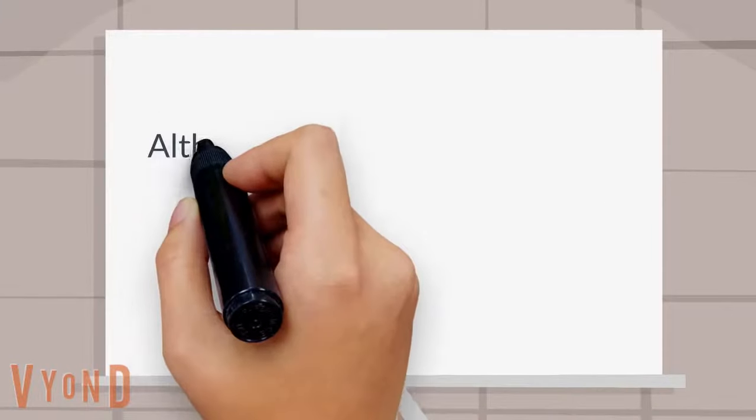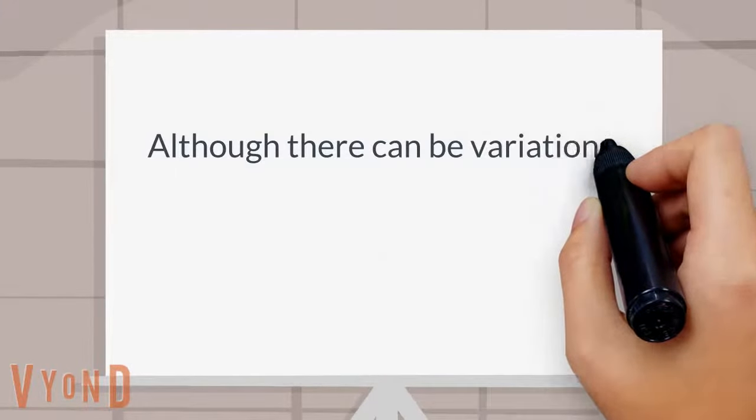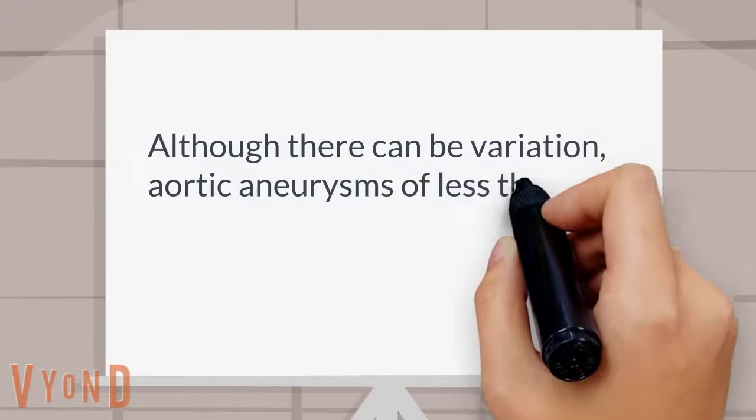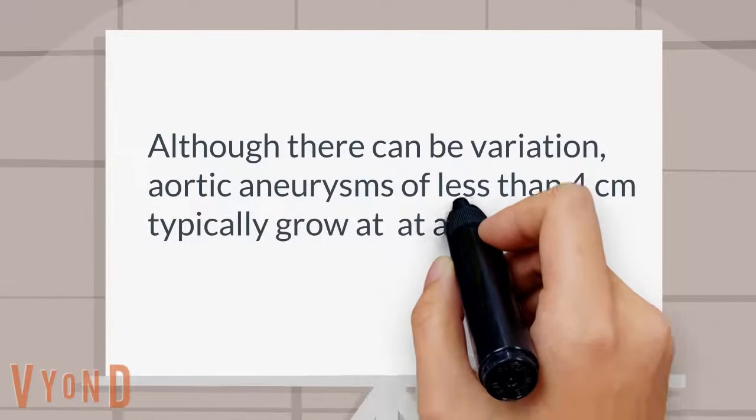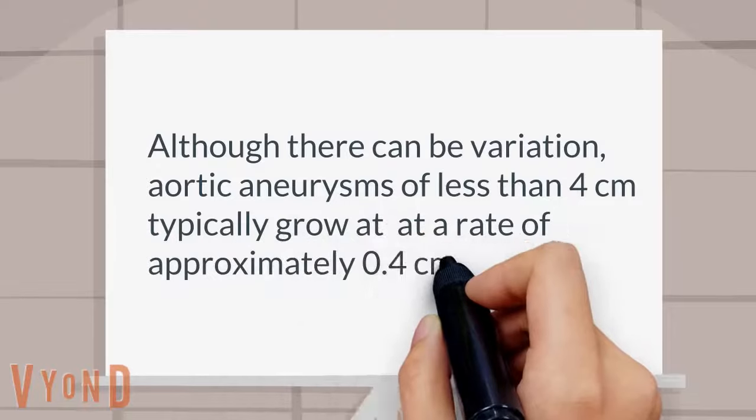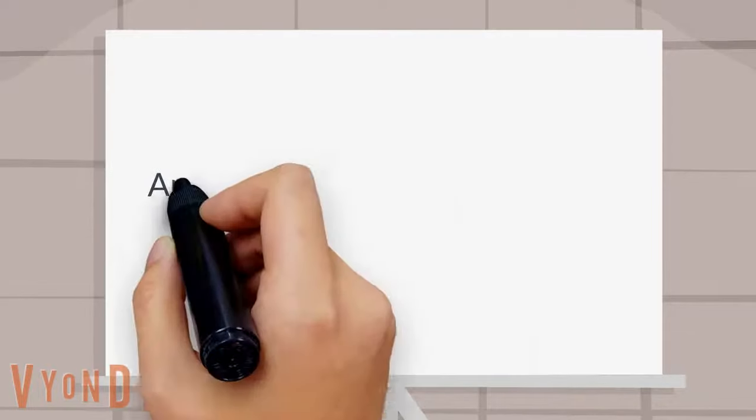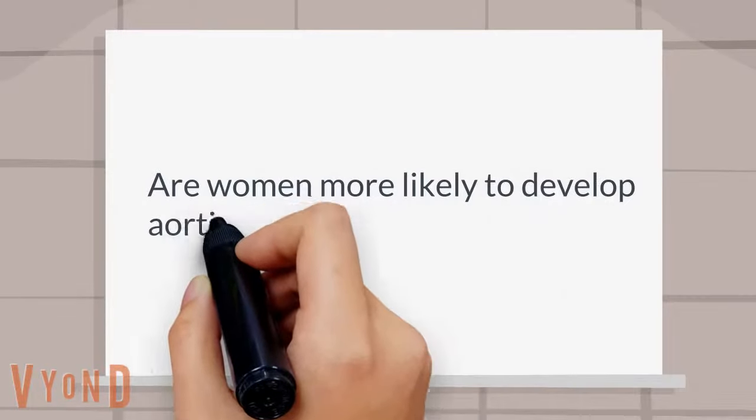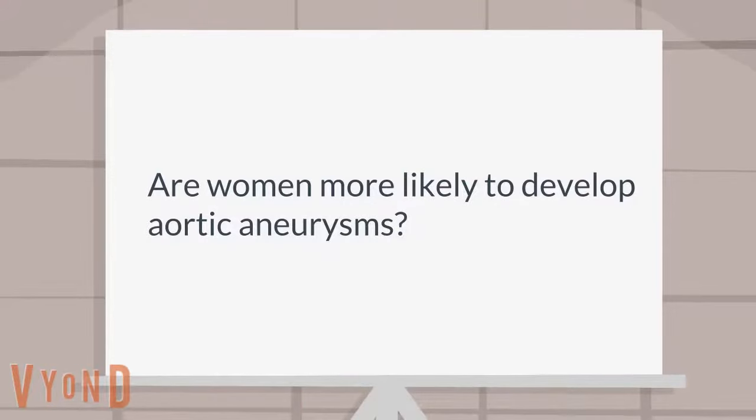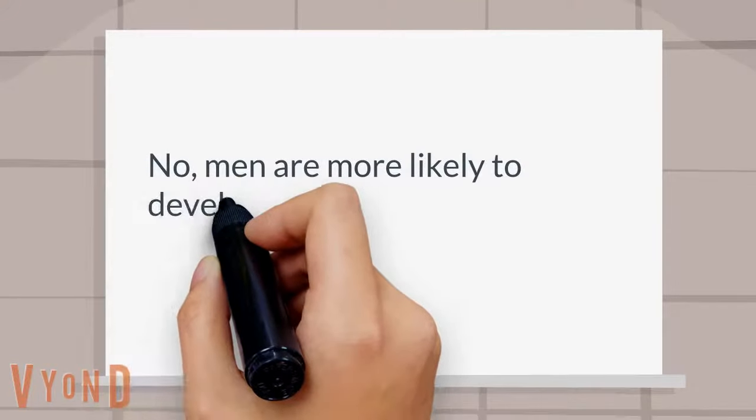Although there can be variation, aortic aneurysms less than 4 centimeters typically grow at a rate of approximately 0.4 centimeters per year. Are women more likely to develop aortic aneurysms? No, men are more likely to develop aortic